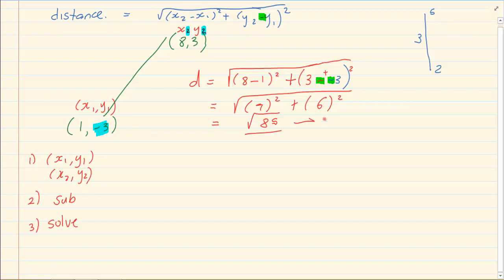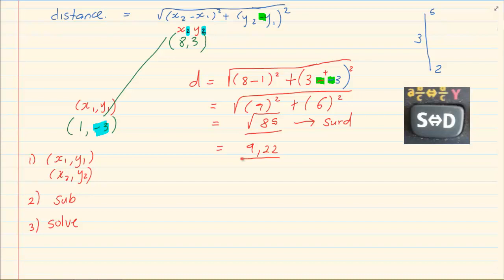If they ask you they want it in surd form, it means that your answer must be a root sign. But if they ask you they want it in a decimal form, then you press on your calculator, you have an SD button. You press that and you get a decimal of 9.22. The button SD means you're moving from surd form to decimal form, or from decimal form to surd form.